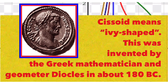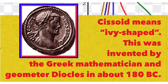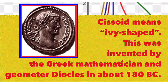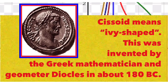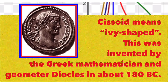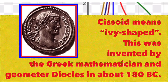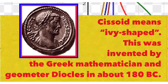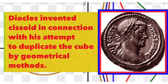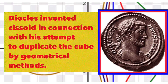The word cissoid means ivy-shaped and this was invented by the Greek mathematician and geometer Diocles in about 180 BC. Diocles invented the cissoid in connection with his attempt to duplicate the cube by geometrical method.